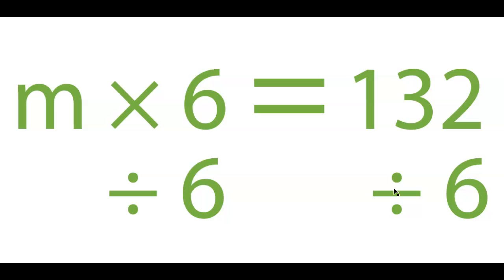Now, I mentioned before the language is really important. We want to use the language correctly. The language here is divide both sides by whatever number. And that's what we're going to do. You show it by putting a little divide by 6 here and a divide by 6 here, right? That's how we show it.